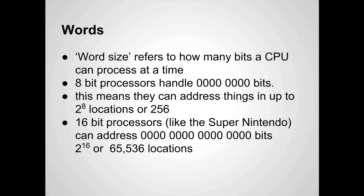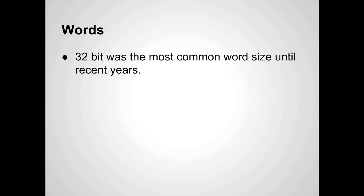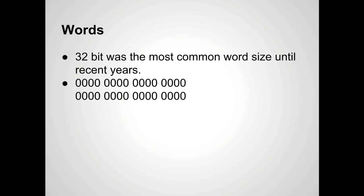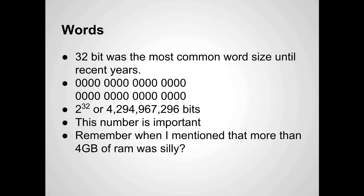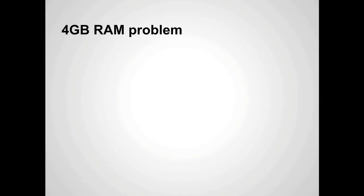So you can see it's significantly more space, meaning it can use a lot more memory and the instructions it can handle are much larger. Essentially, each cycle, a bigger chunk of information is being processed. 32-bit was the most common word size until recent years — that's two to the 32nd, or 4,294,967,296 locations. This number is important. Remember when I mentioned that more than four gigabytes of RAM was silly? This is why. I'm going to talk about the four gigabyte RAM problem.